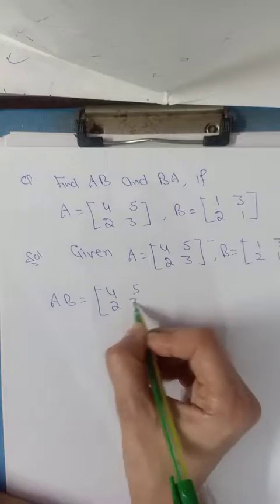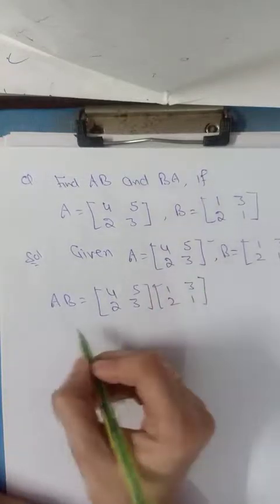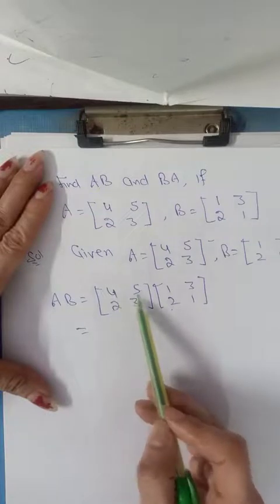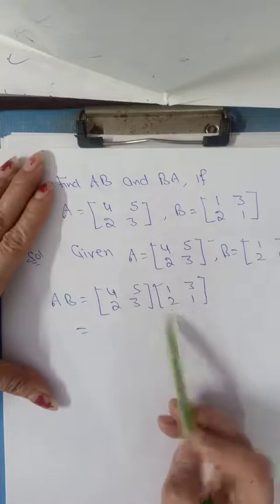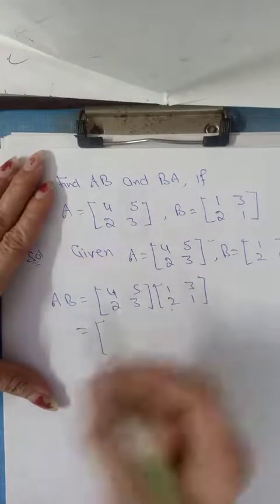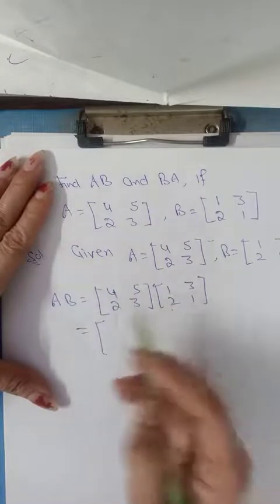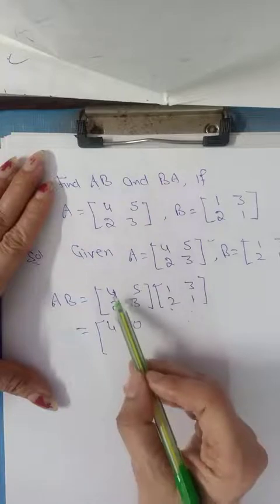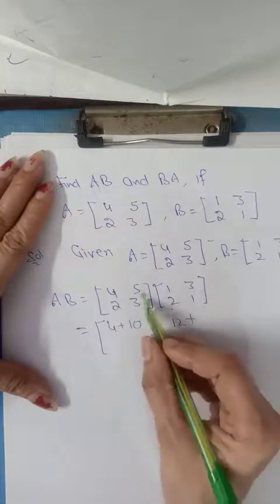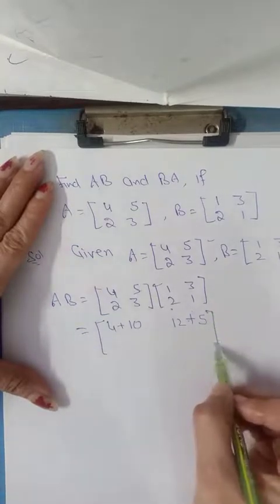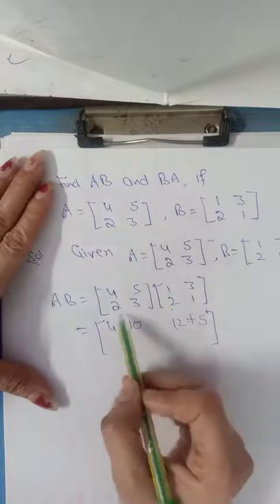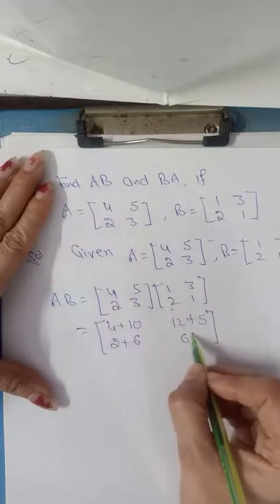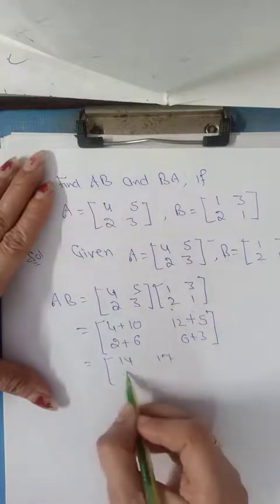Matrix A is given 4, 5, 2, 3 and matrix B is given 1, 3, 2, 1. So first we will calculate AB: matrix A into matrix B. Multiplication method: we will start with R1 multiplied by C1, then R1 multiplied by C2, similarly R2 multiplied by C1 and R2 multiplied by C2. So first row multiplied by first column: 4 into 1 plus 5 into 2 equals 14. Now second column: 4 into 3 plus 5 into 1 equals 17. Now second row: 2 into 1 plus 3 into 2 equals 8. Then 2 into 3 plus 3 into 1 equals 9. So 14, 17, 8, and 9.